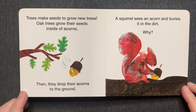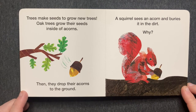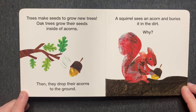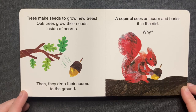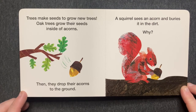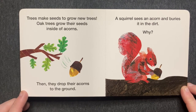Trees make seeds to grow new trees. Oak trees grow their seeds inside of acorns. Then they drop their acorns to the ground. A squirrel sees an acorn and buries it in the dirt.